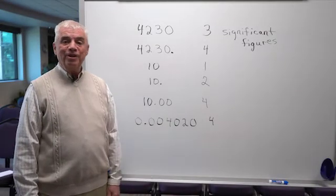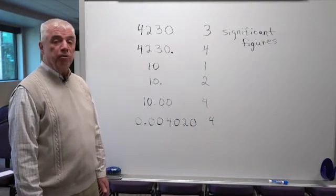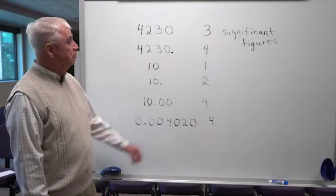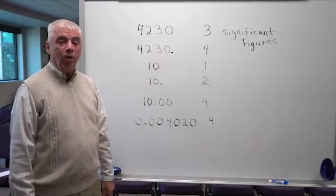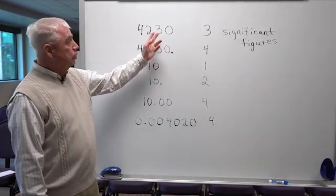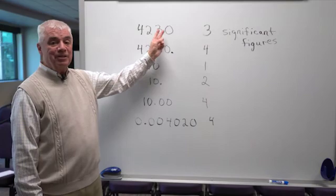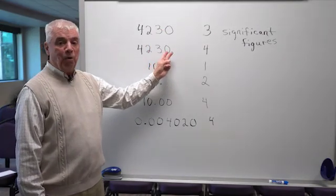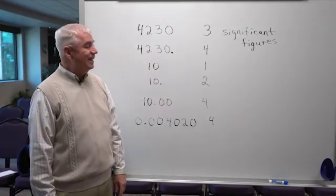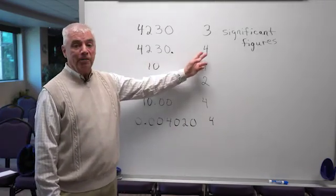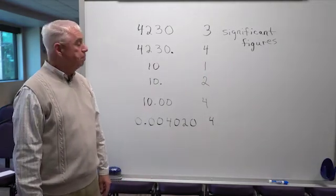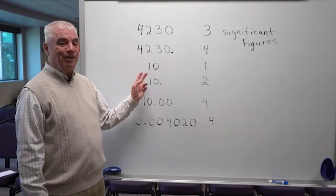With the ninth edition of Chemistry for Today, there's been a change in rules for significant figures pertaining to trailing zeros. 4230, for example, has only three significant figures. In order for a trailing zero to be significant, there must be a decimal point someplace in the number. So 4230 with a decimal at the end has four significant figures. And that's a change from an earlier portion of this video and the way that we treated significant figures.